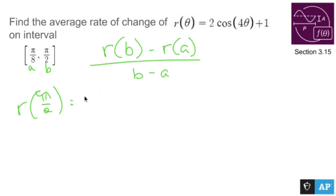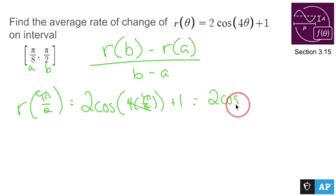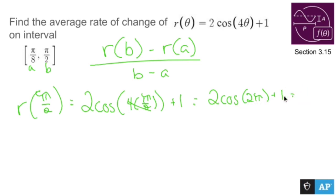r of pi over 2 is going to be 2 cos of 4 times pi over 2, plus 1. 4 times pi over 2 simplifies to 2 pi, so we have 2 cos 2 pi plus 1. The cosine of 2 pi is 1, so 2 times 1 plus 1 is 3. So r of pi over 2 equals 3.